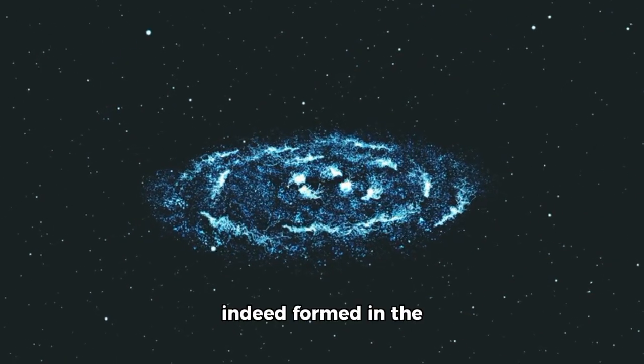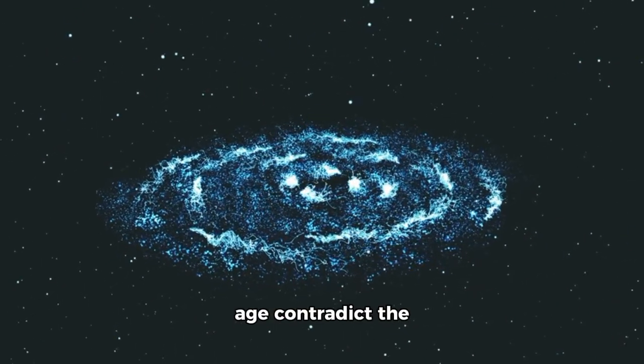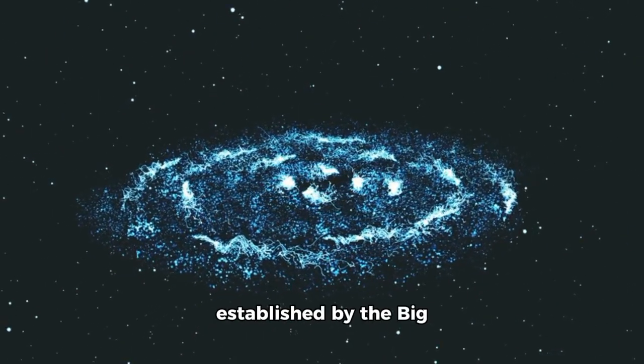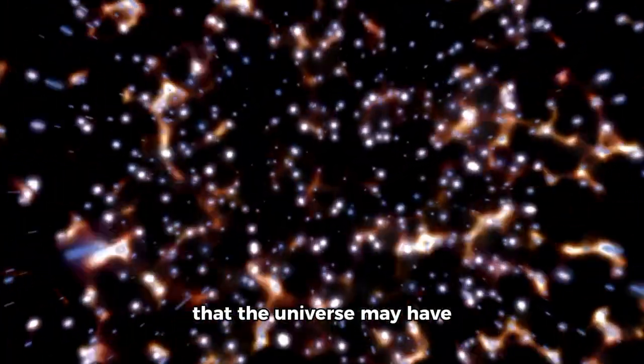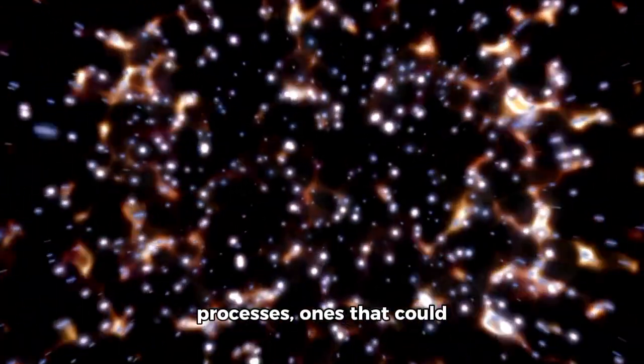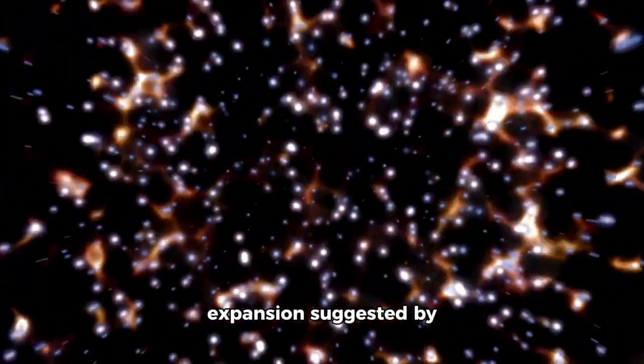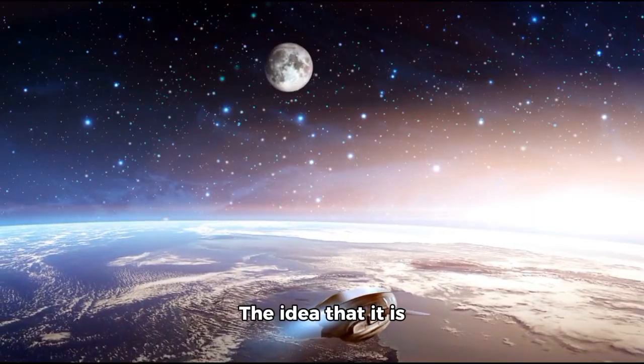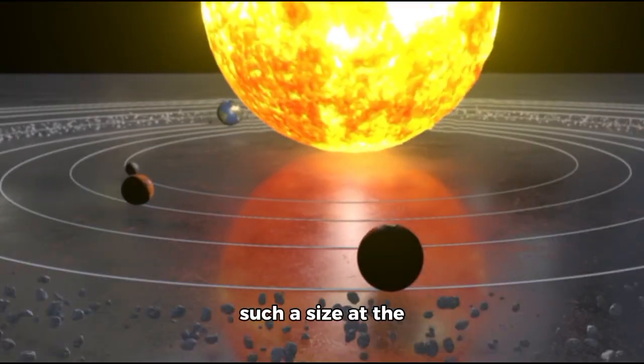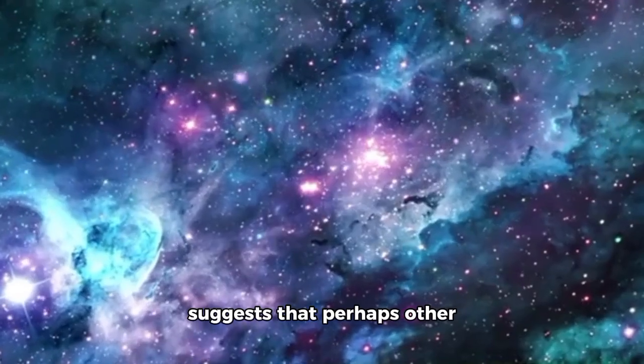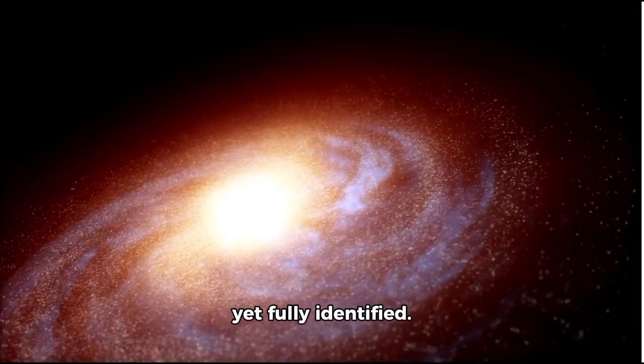If these galaxies were indeed formed in the early universe, their underlying structure and age contradict the expected cosmic timeline established by the Big Bang theory. This has led to speculation that the universe may have undergone a different set of processes, ones that could involve more complex interactions than the simple expansion suggested by traditional models. The idea that it is possible for galaxies to form so smoothly and at such a size at the beginning of the universe suggests that perhaps other forces or processes were at work, ones that we haven't yet fully identified.